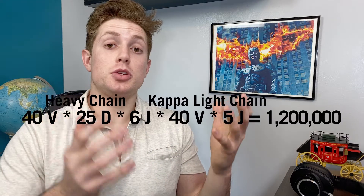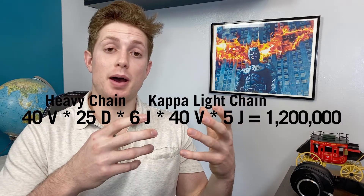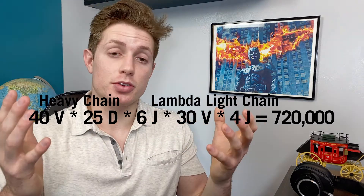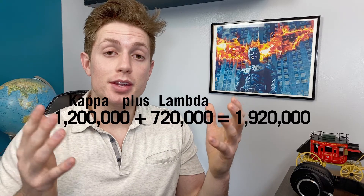For the light chains, we only use the V and J segments, and we have two different types of light chains. For heavy chains, we have 40 different V, 25 different D, and 6 different J. The kappa light chain can have 40 different V and 5 different J, and the lambda type can have 30 different V and 4 different J. If you multiply those out, for antibodies using a heavy chain and a kappa light chain, we get about 1.2 million different possibilities, and for a lambda light chain with the heavy chain, about 700,000. So together we have about 2 million unique antibodies.